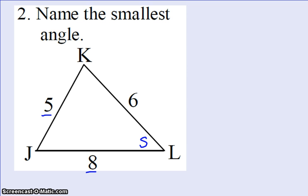8, which is my longest side, the angle opposite that will be my largest or my biggest angle. And then 6, that is the side length that's in the middle, so the angle opposite that will be the one that is in between or in the middle. So to name the smallest angle, it looks like it will be angle L.